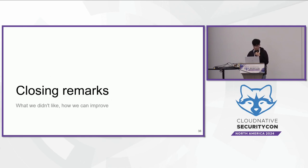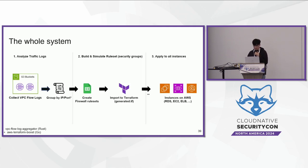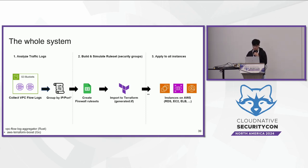Let's wrap up with an overview of the entire system. First, we collect VPC flow logs into S3 buckets, then analyze the traffic data grouping by IP and port using our Rust-based program. Next, we build and simulate our ruleset using a spreadsheet, then import the ruleset into Terraform generating TF configuration files. Finally, we apply these configurations to instances using Terraform, accelerated by our AWS Terraform Boost tool written in Go. The whole process takes us from raw network logs to implemented security groups in a structured, efficient manner.